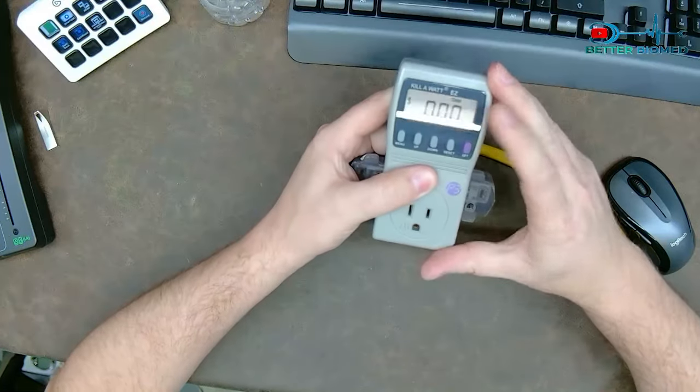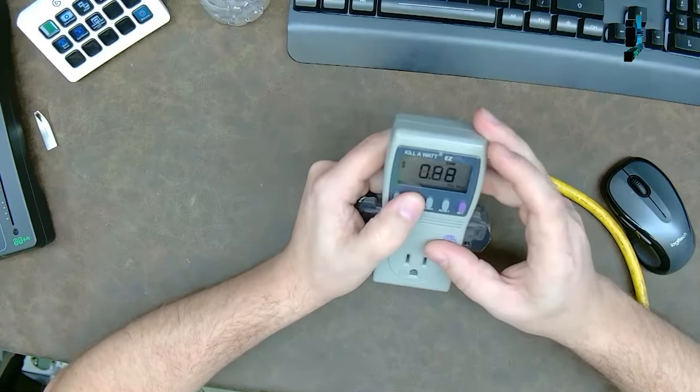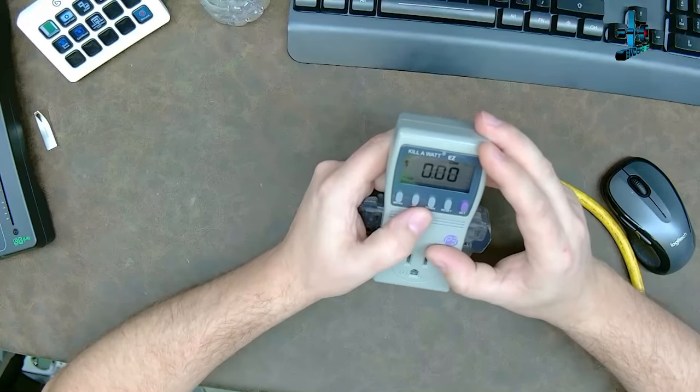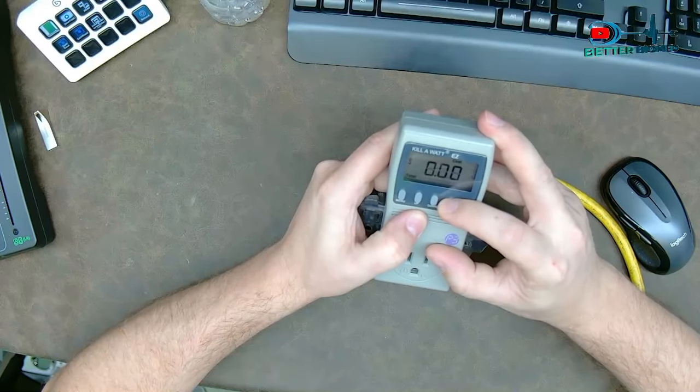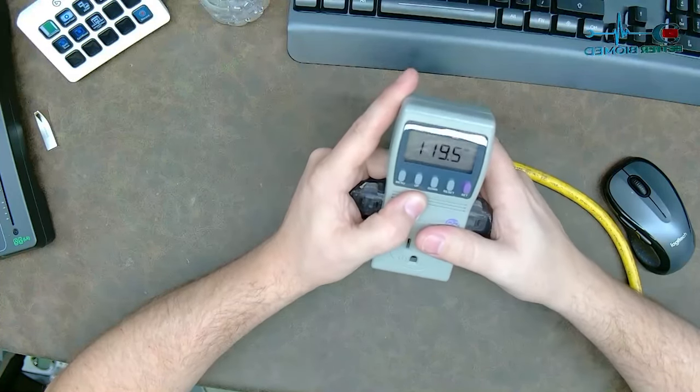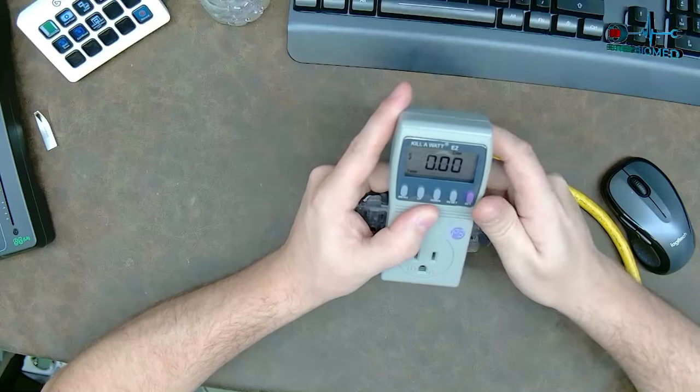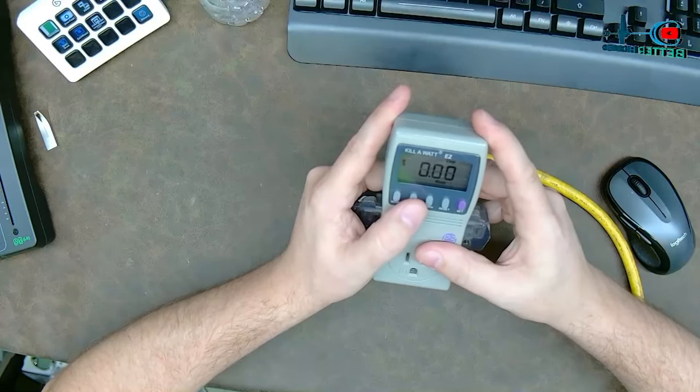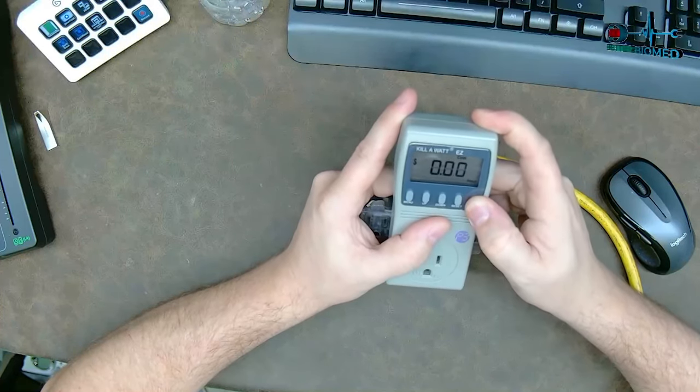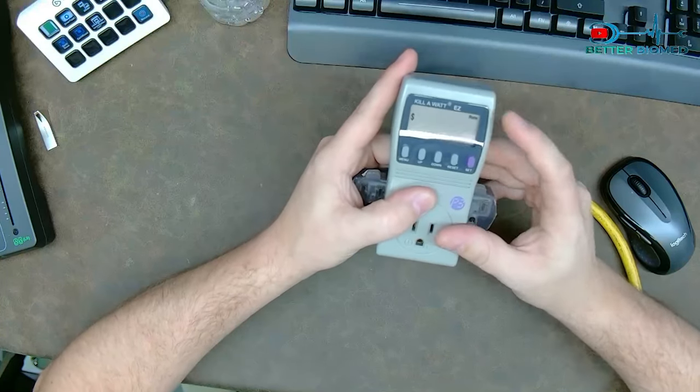This guy is very much known for being a calculator to measure your energy usage over a period of time. And that could be one day, one hour, one week, one year. It will tell you how much electricity a specific device uses over the course of a year. So let's go into it. Cost. This is a modified version of an old version that I've seen where you used to have to hold buttons and stuff.